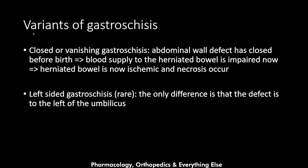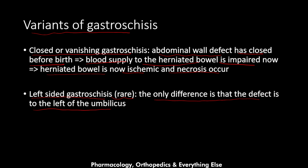There are two variants of gastroschisis. First, closed or vanishing gastroschisis, in which the abdominal wall defect closes before birth. This impairs blood supply to the herniated bowel — the closed hole pushes against the bowel, leading to ischemia and necrosis. Second, left-sided gastroschisis, a rare type where the defect is to the left of the umbilicus instead of the right.